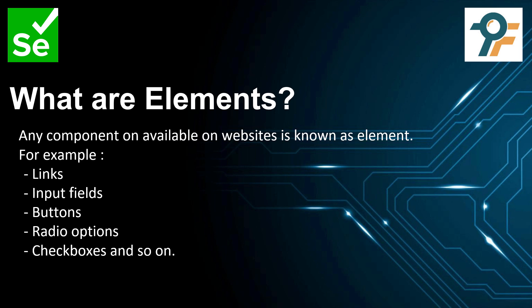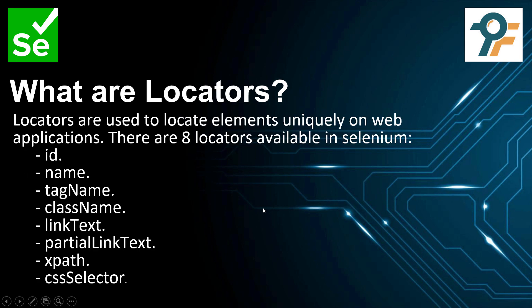Now that we know about elements, in order to automate those elements, the first thing we need to do is locate them — and here come locators. Locators are used to locate elements uniquely. We need to identify or locate these elements uniquely on the web application. There are eight locators available in Selenium: ID, Name, Tag Name, Class Name, Link Text, Partial Link Text, XPath, and CSS Selector.